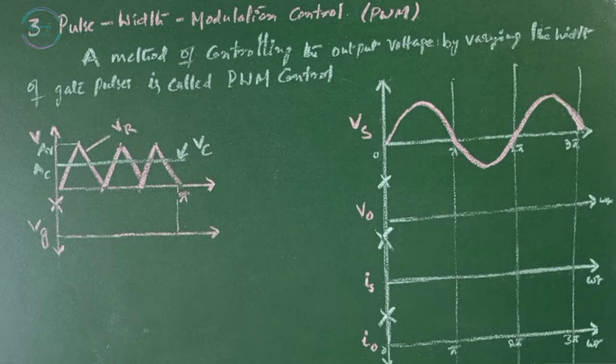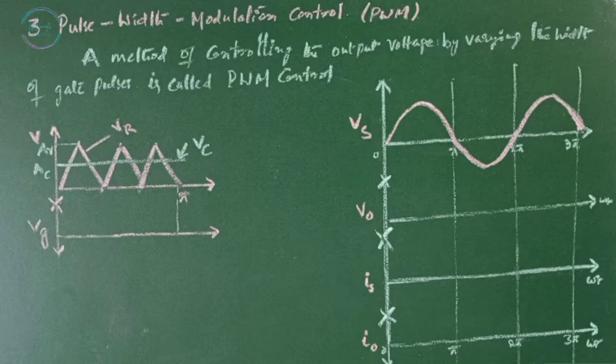Pulse Width Modulation Control, PWM. A method of controlling the output voltage by varying the width of the gate pulses is called Pulse Width Modulation Control.